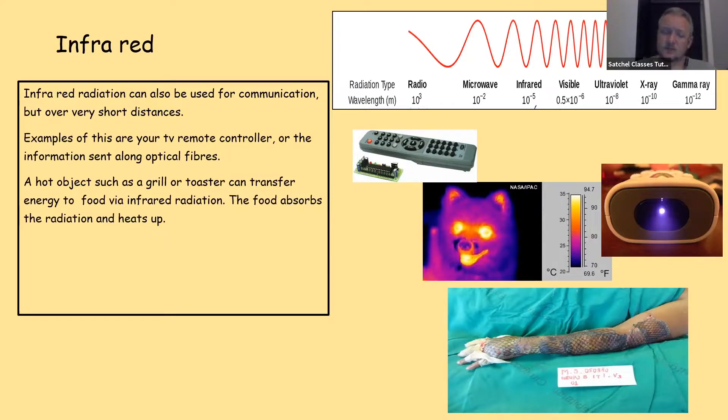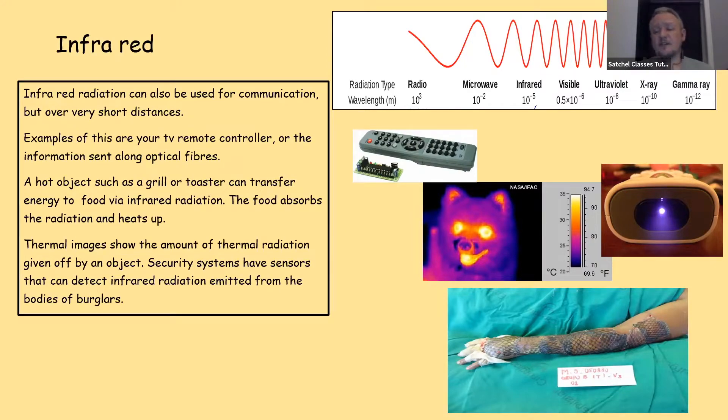Other than that, a hot object, such as a grill or a toaster, can transfer energy to food via infrared radiation. The food then absorbs the radiation on the surface of the food. This is unlike microwaves which cook from the inside out. Infrared is absorbed by the surface. It can't penetrate inside into the food, so it's absorbed at the surface and cooks from the outside in. Thermal images also show the amount of thermal radiation given off by an object. Security systems have sensors that can detect infrared radiation emitted from the bodies of burglars, which is really useful when you consider that most of the time burglars will try to burgle a place when it's dark, so not much visible light is present. So a normal security camera might miss them because it's too dark, whereas infrared given off from the bodies can be picked up even in dark. The other way that this works is you can use infrared beams that cross doors, and if the burglar can't see it, they don't know it's there. When they pass through, they set off the sensor and the alarm.